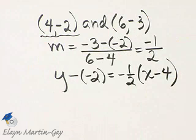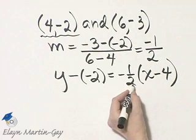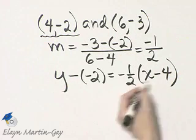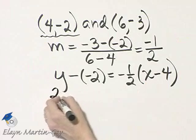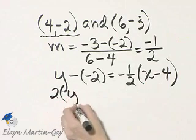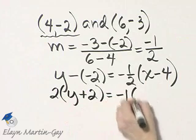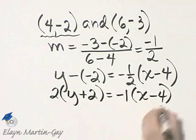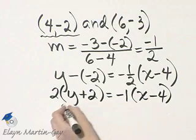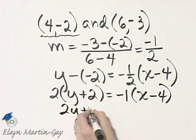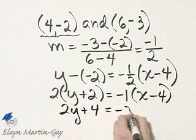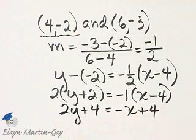Now it makes no difference how you simplify this. I know many of you are in the habit of multiplying through by the LCD, so let's go ahead and just do that. I'm going to multiply both sides by 2, so the left side by 2, and I have y plus 2 there, by the way, is equal to negative 1 times x minus 4. Let's see what we have. 2y plus 4 is equal to negative x plus 4.